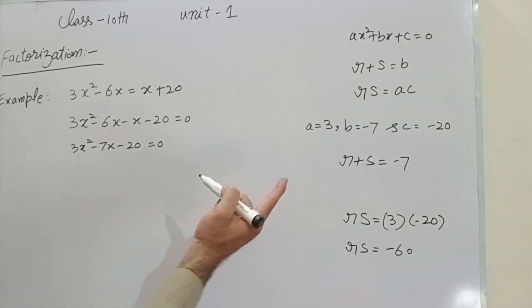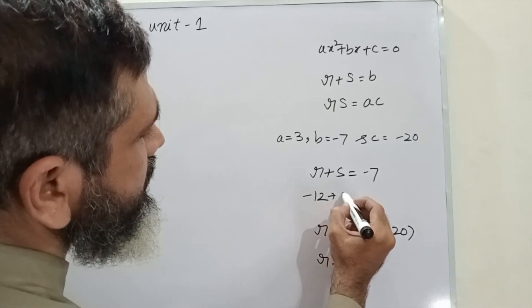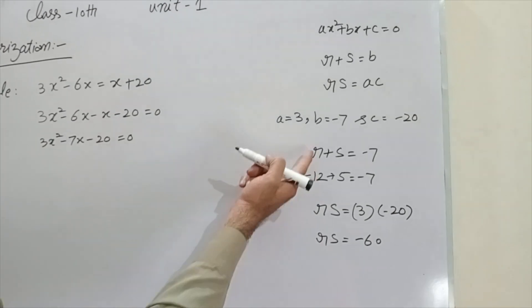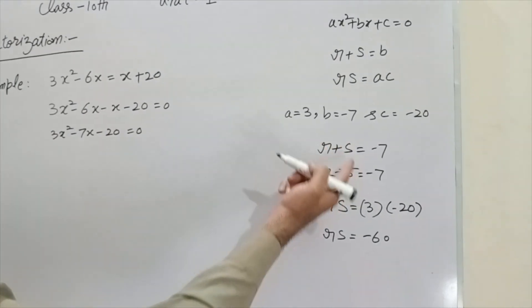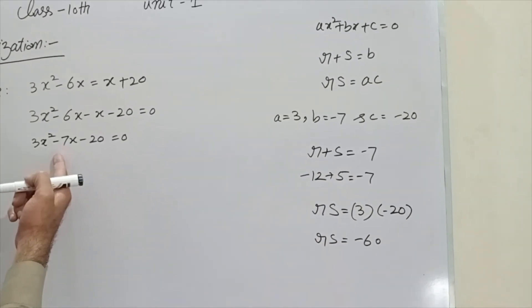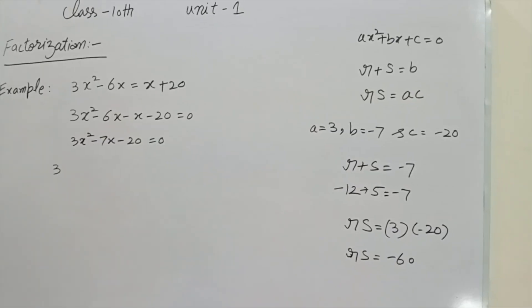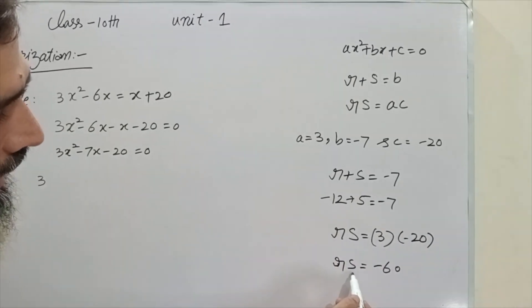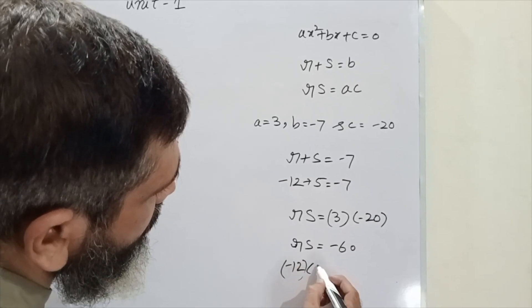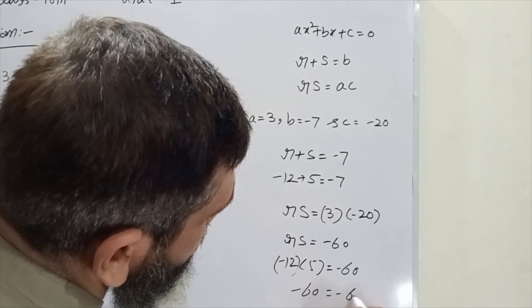The two numbers are minus 12 and plus 5. We set r equal to minus 12 and s equal to plus 5. Adding them: minus 12 plus 5 equals minus 7, which is b. Multiplying them: minus 12 times 5 equals minus 60, which equals ac.